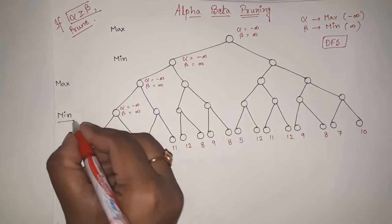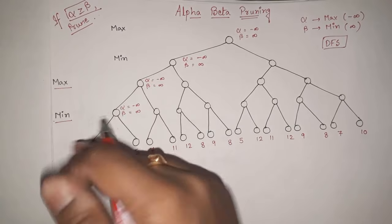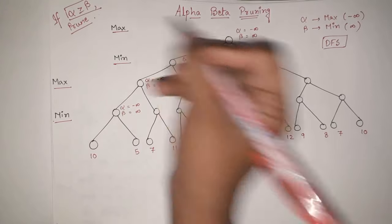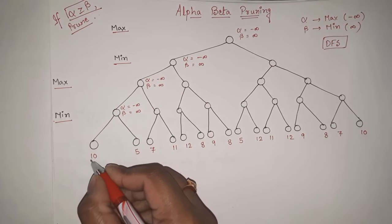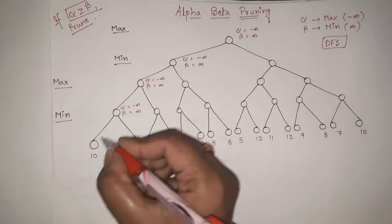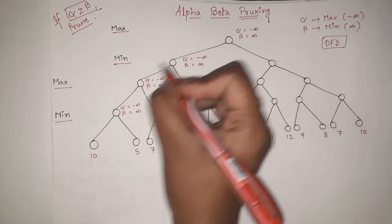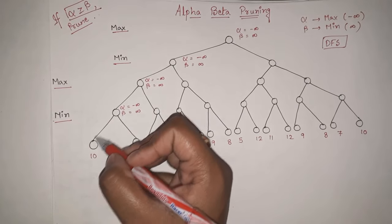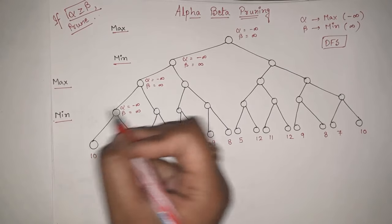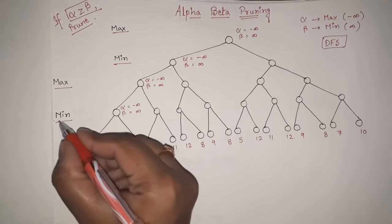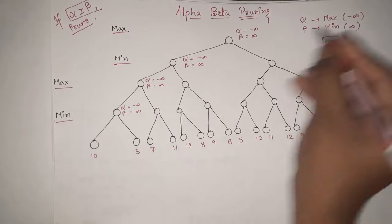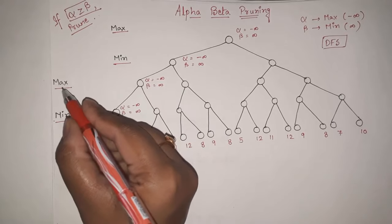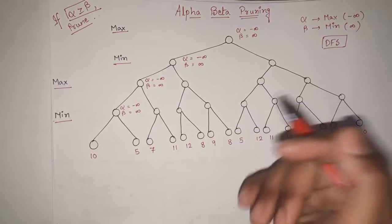This level is for min, and the root is max. We are having min and max alternately. Now, in a min level, we will only update beta. And in the max level, we will only update alpha. Do remember that.